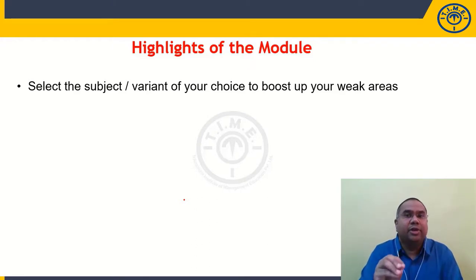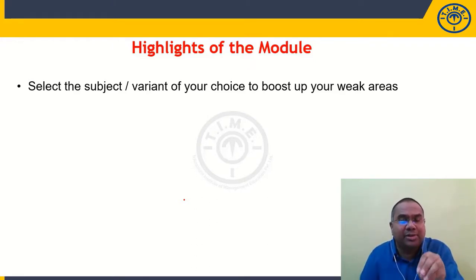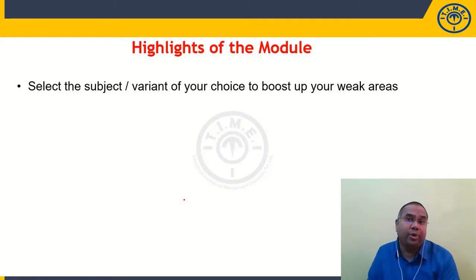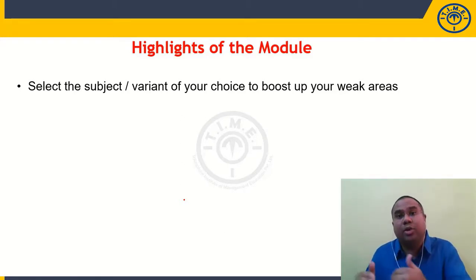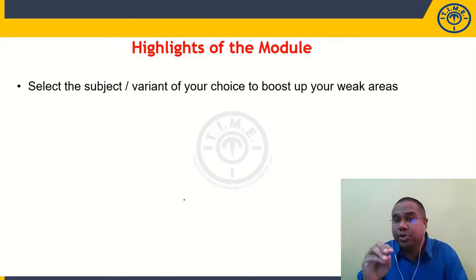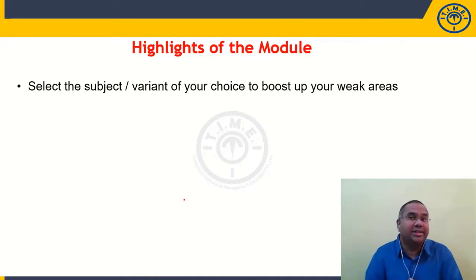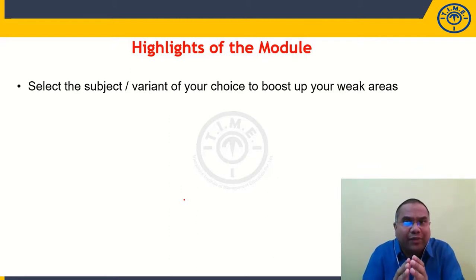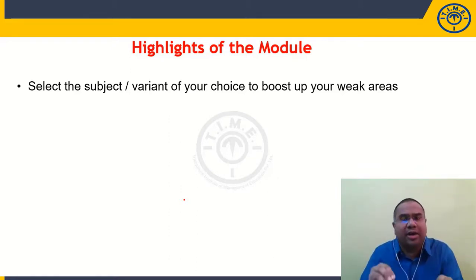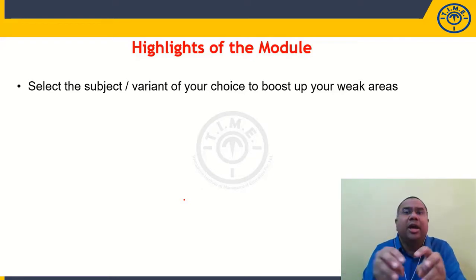If you are not good at your reasoning section, you have the flexibility to choose only the reasoning module. Similarly, if you are not good at English language, you can choose the English module. You have the flexibility to choose any one of those modules — either quant or reasoning or English — or a combination of any of these three.